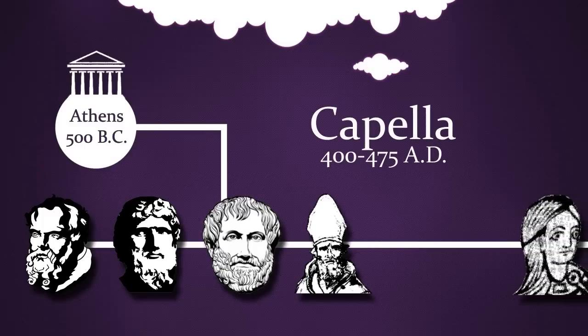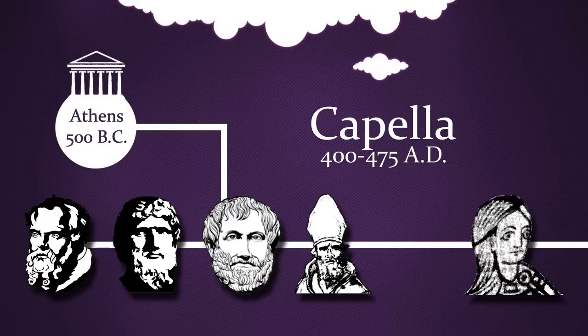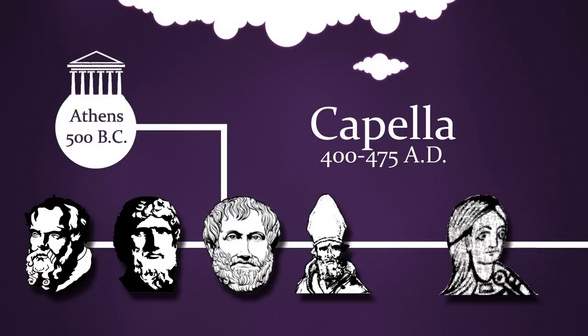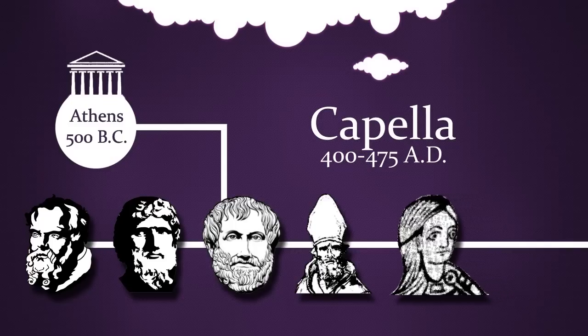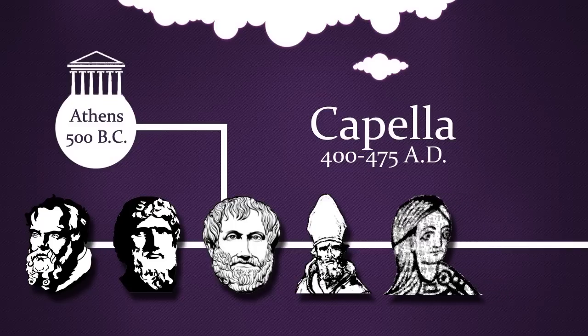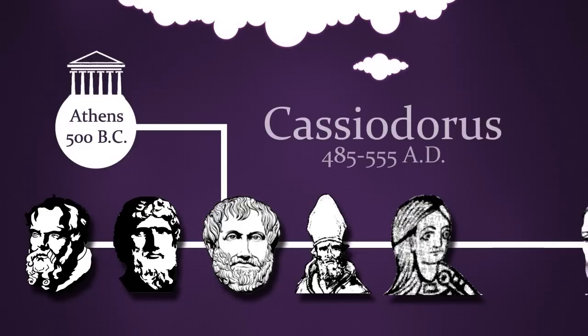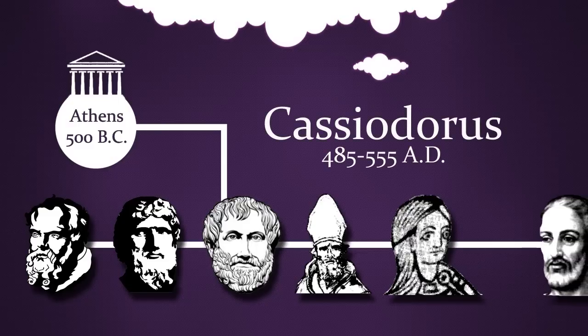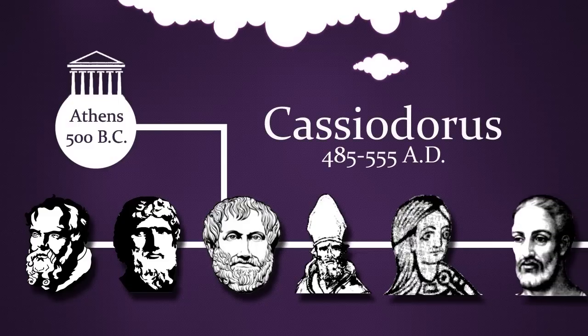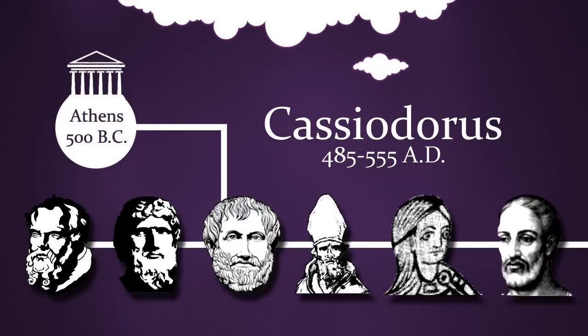Capella followed in Augustine's footsteps. He played an important role by putting all seven liberal arts in a single volume and presented them in a condensed form that was widely acceptable to medieval readers. Cassiodorus was a Roman senator and was influential in transforming a monastery into a school. He helped make liberal arts a standardized part of education.